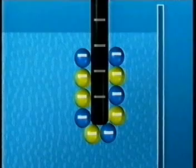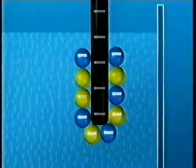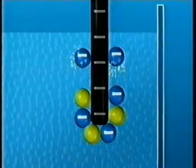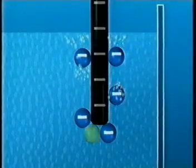Competition also happens at the positive electrode. This time, chloride ions win out, losing their negative charge and forming bubbles of chlorine gas.